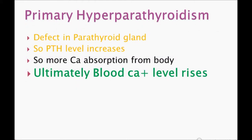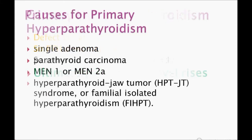Primary hyperparathyroidism involves a defect in the parathyroid gland itself — that is what distinguishes primary from secondary hyperparathyroidism. The most common cause of primary hyperparathyroidism is a single parathyroid adenoma. This causes PTH to increase, raising blood calcium and lowering phosphate and potassium.